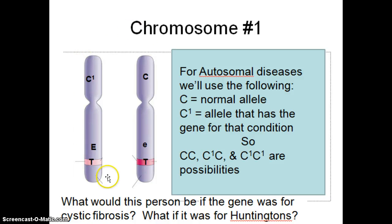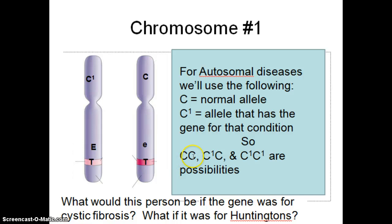We have two chromosomes — one from your mom and one from your dad. For autosomal diseases, we'll use C to represent a chromosome. A normal allele is C, and C-prime denotes the chromosome carrying the gene for the particular condition. The three possibilities are CC, C-prime C, or C-prime C-prime. These apply to both autosomal dominant and autosomal recessive. For autosomal dominant, we assume C-prime C, since C-prime C-prime would be very rare. For autosomal recessive, all three are possibilities.